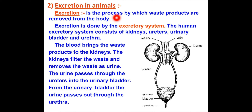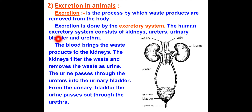Excretion is carried out by the excretory system. Just as the digestive system helps with digestion of food, the excretory system removes unwanted products from the body. The human excretory system consists of the kidneys, ureter, urinary bladder, and urethra.